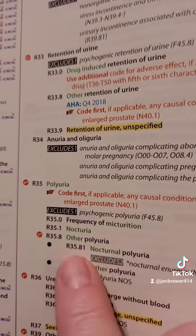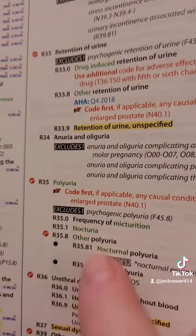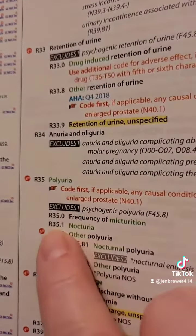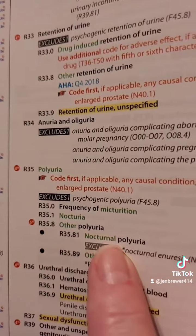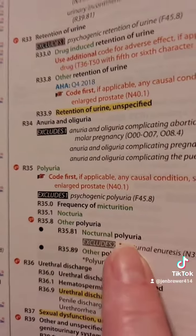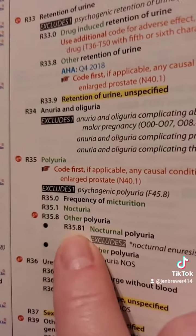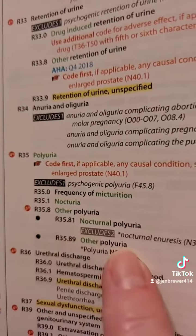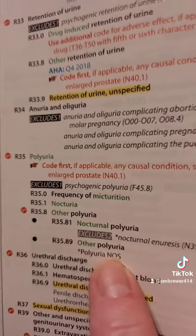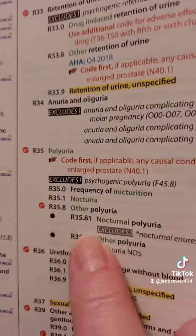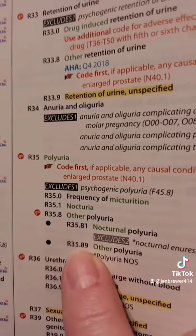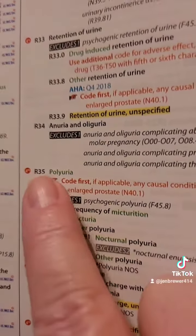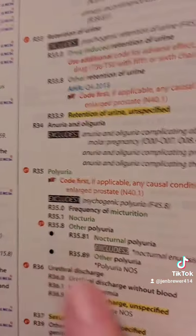You need to make sure you identify which polyuria you have. Is it nocturnal — nighttime uresis? You need to use that specific code. Or is it another polyuria that is not nonspecific? You can use those two codes as your second diagnosis for polyuria, but you should not be using the nonspecific one.